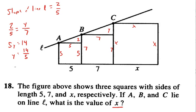7 plus 14 fifths is going to be 35 fifths plus 14 fifths, which equals 49 fifths. That's our answer.